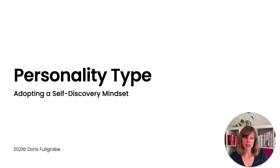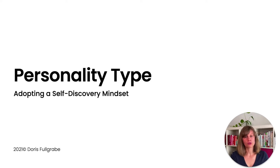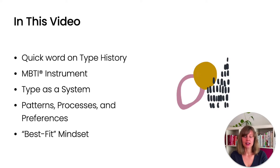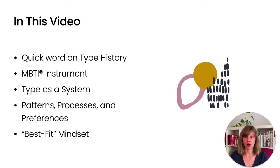There are several ways to find out what your type preferences are. You can use instruments like a questionnaire, or do a self-discovery. I like to do a combination. In this video, I'll share a little bit about where type theory came from, the most prominent instrument and its common criticisms, another way to look at type, and what you can do to make sure to get a result that really resonates with who you are.